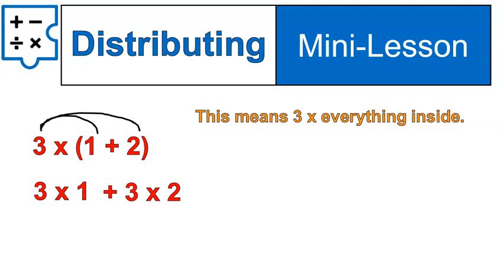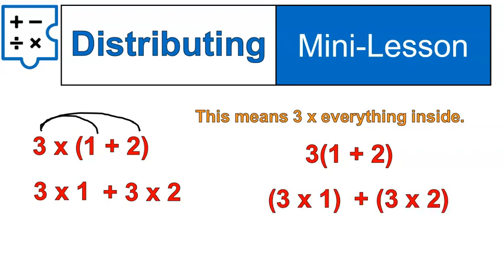The way that this will start to look later on is that you'll see it written like this. Notice the only difference is we got rid of that multiplication sign, and that's pretty standard. If something's right up against a grouping symbol, it means that it's multiplied times what's inside there. So in other words, three times everything inside there, or three times one and three times two. So you would write that like this: 3 × 1 + 3 × 2.